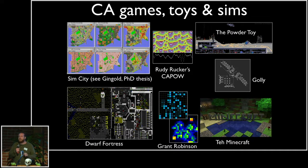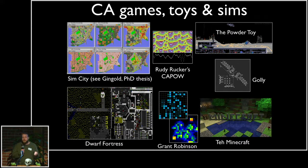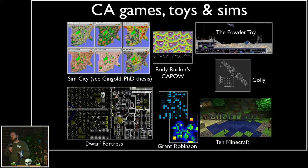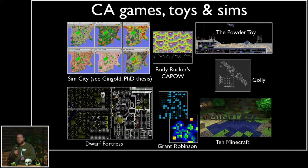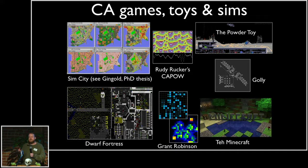It's an ever-growing set and very difficult to keep current, but some deserve certain mentions. SimCity is really useful because it's been very well studied. If you read Hein Gingold's PhD thesis, done with Michael Mateas at UCSC, he talks a lot about the various different layers of cellular automata in SimCity and how they interact. And then of course there are pure toys like Golly, which is a Game of Life simulator, and Kapow, which Rudy Rucker at San Jose State developed as a continuous-valued cellular automata. And then bigger things like Dwarf Fortress and Minecraft, which more or less fit into this kind of framework — they're tile-based and there are interactions between cells.